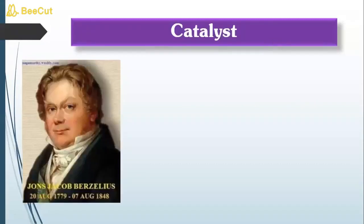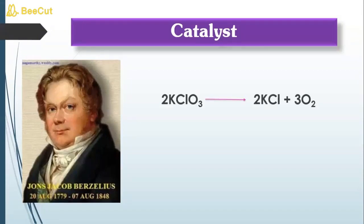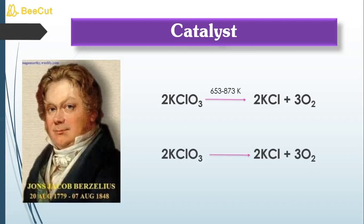The scientist on the screen is Jöns Jacob Berzelius, who proposed the vital force theory. He was doing a reaction in the lab — decomposition of potassium chlorate. When Berzelius heated potassium chlorate strongly, it slowly underwent decomposition to give dioxygen at 653 to 873 Kelvin — a huge temperature range. However, when a little amount of MnO₂ was added to the same reaction, decomposition took place at a temperature range of 473 to 633 Kelvin — a drop of 200 Kelvin.